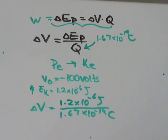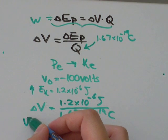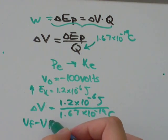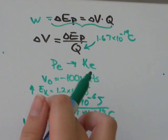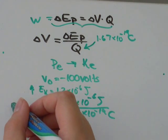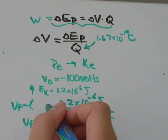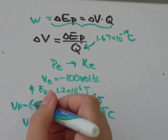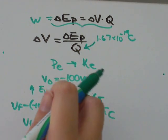And the change in voltage is going to be the voltage where it ends up minus the voltage where it started. I'm just going to say that's voltage final minus voltage initial. And the voltage final is what we don't know. And we know that the voltage initially was negative 100 volts.